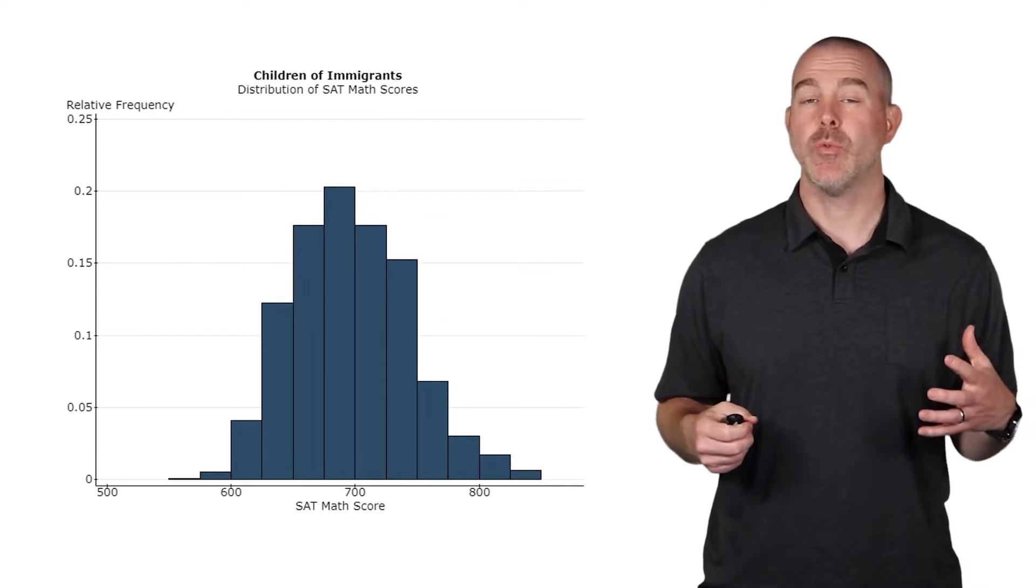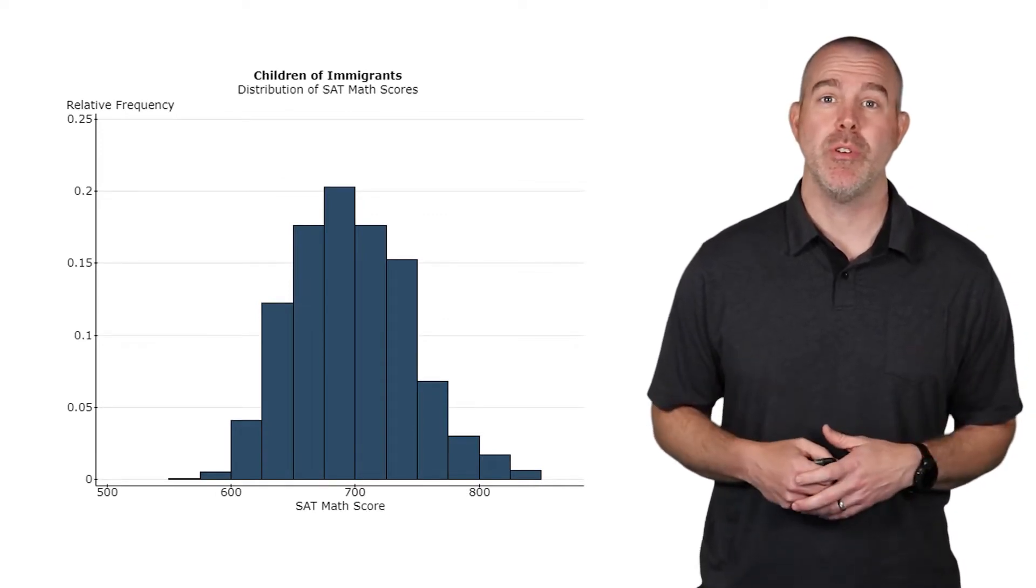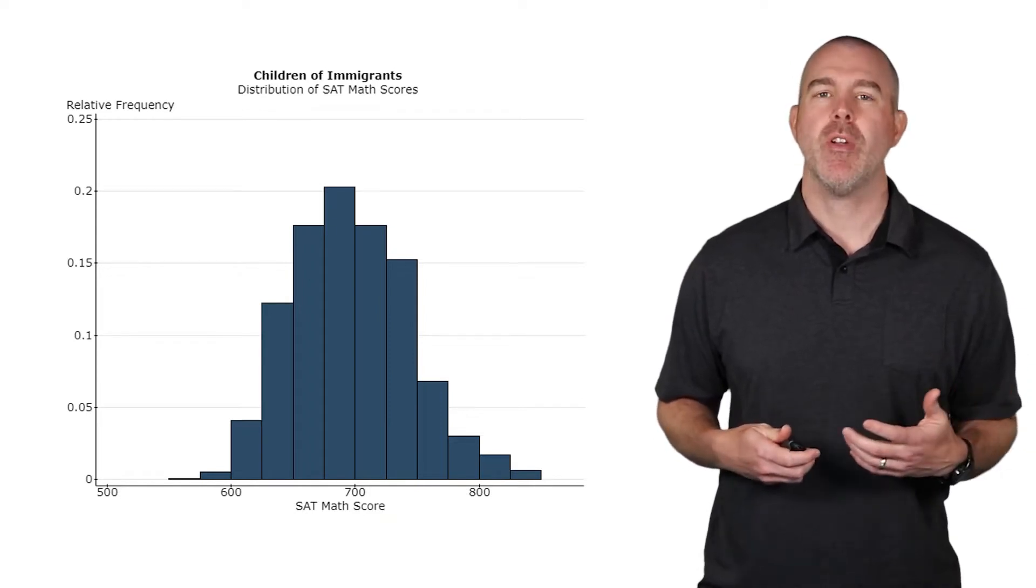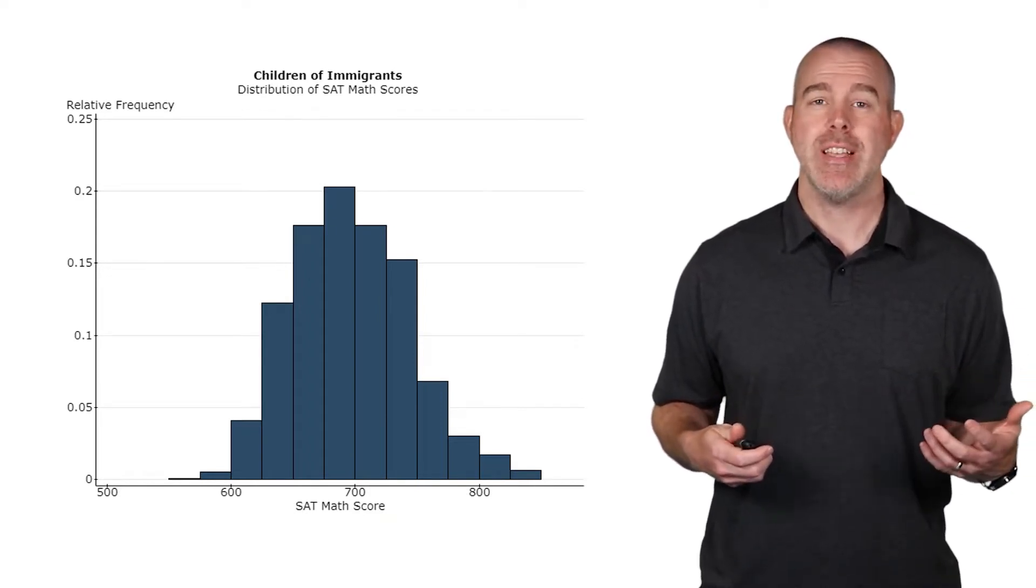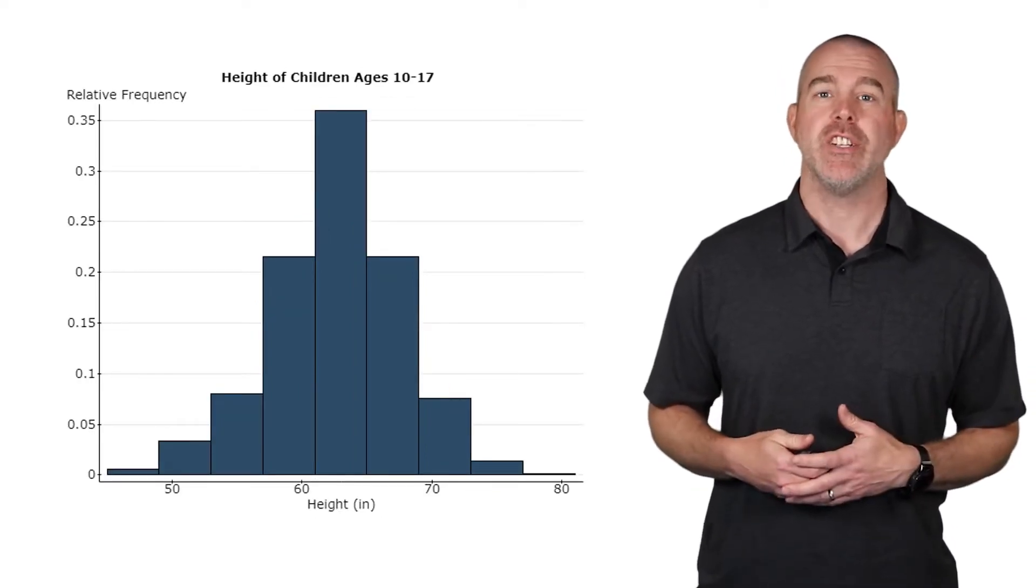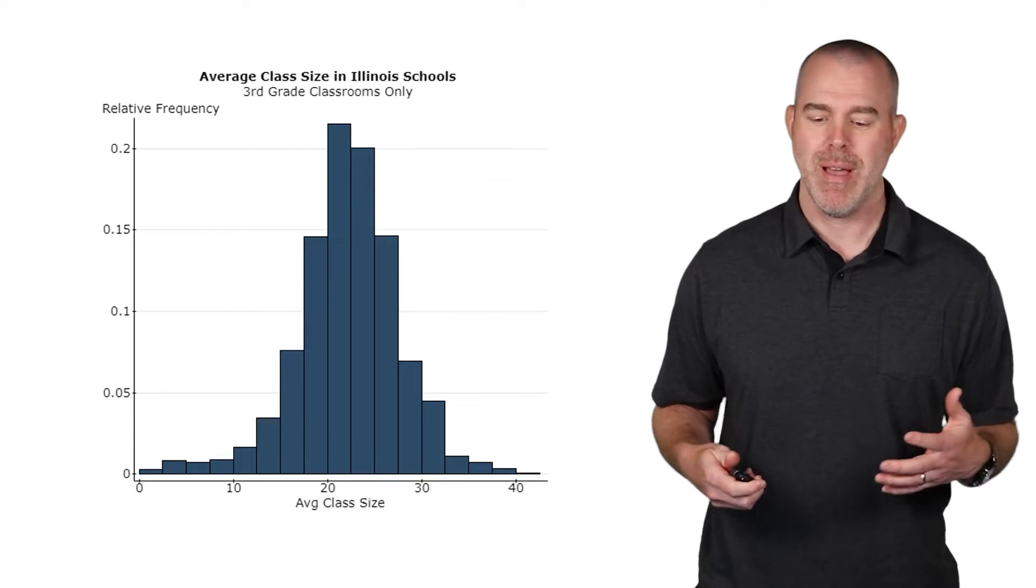You might recall in the past, we've looked at the shape of the distribution of some variables. For example, we have this one, children of immigrants, their distribution of SAT scores looks pretty bell-shaped. How about the heights of children, age 10 to 17? Again, pretty symmetric.